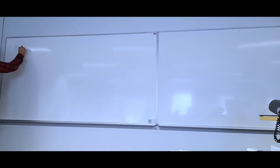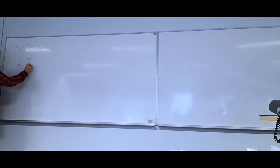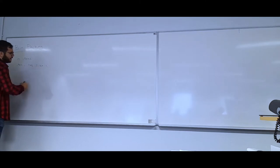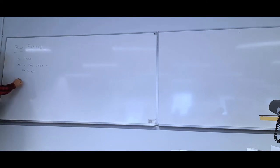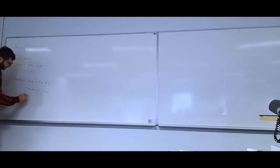We talked about the problem of bin packing. Let me remind you what the problem was and what results we got. The problem was that we have n different items, and item i has a size of si. We assume that all of our sizes are between 0 and 1, and we want to pack these items into bins of size exactly 1, using as few bins as possible. The question was: what is the minimum number of bins of size exactly 1 that I need to pack all of these items?